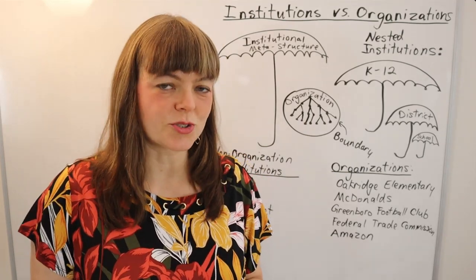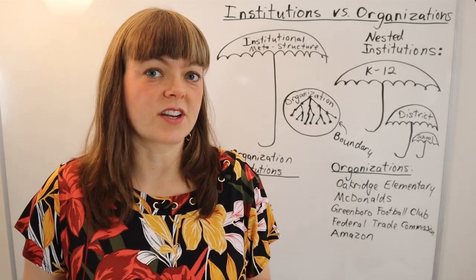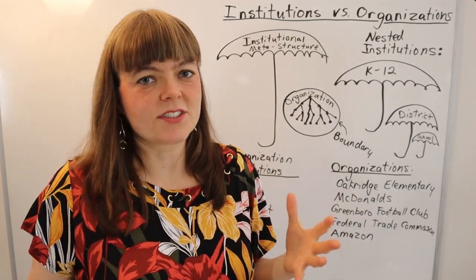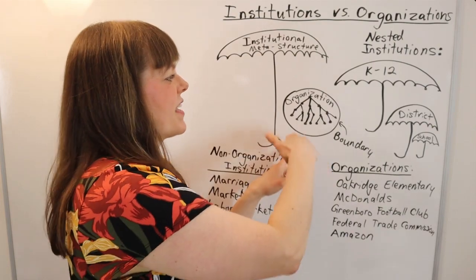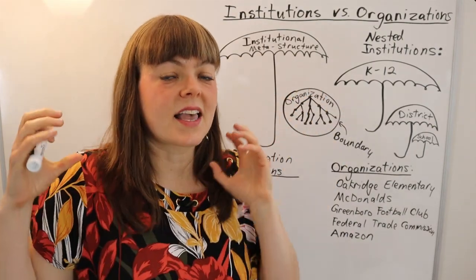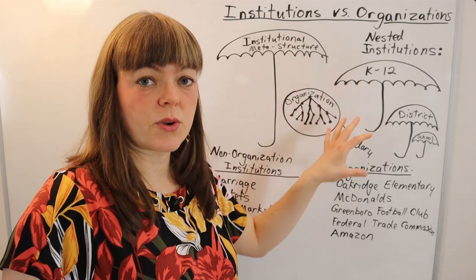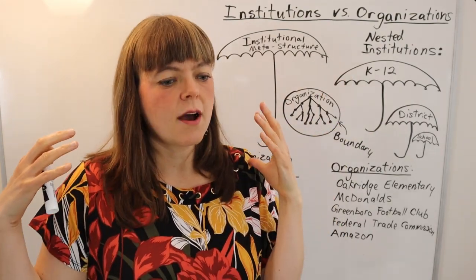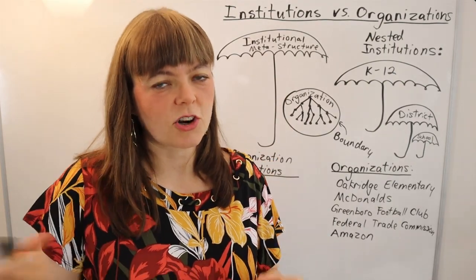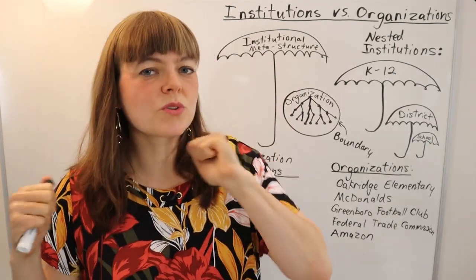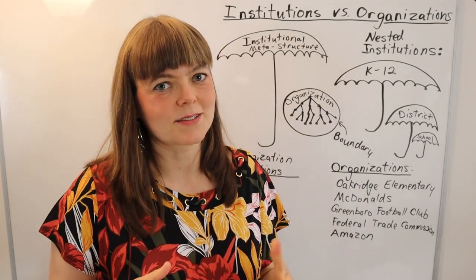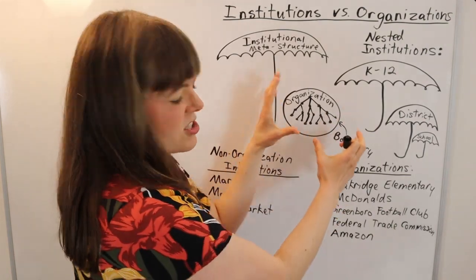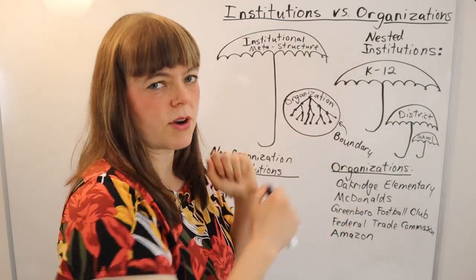What is the difference between an institution and an organization in institutional economics? An organization has a clear boundary and a specific purpose. In general, there's going to be some kind of hierarchical structure, or some very official way the organization is structured in terms of rules, roles, relationships, and enforcement mechanisms — those are the components of an institution. But with an organization, there's a clear boundary and purpose.